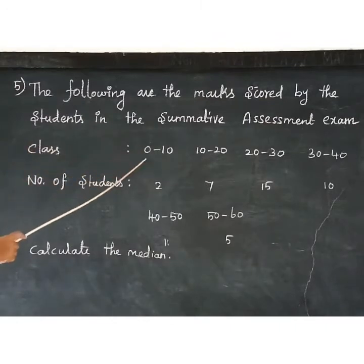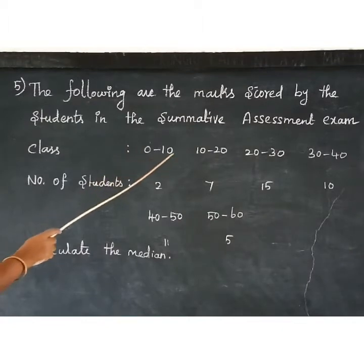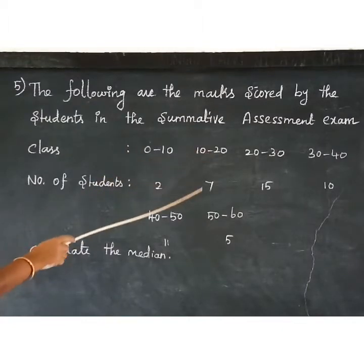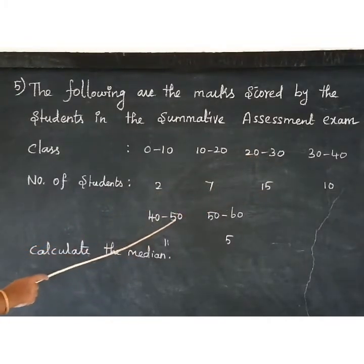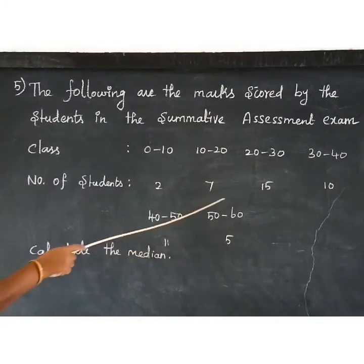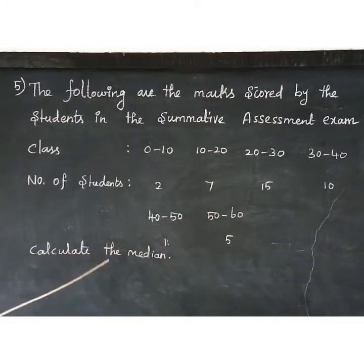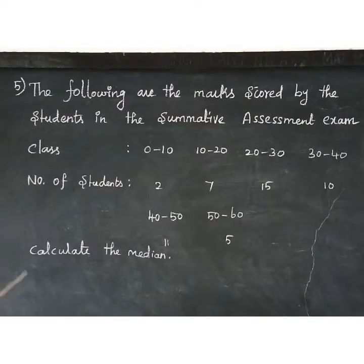The class interval and number of students are given. 0–10 is 2, 10–20 is 7, 20–30 is 15, 30–40 is 10, 40–50 is 11, 50–60 is 5. Calculate the median value. This is grouped frequency distribution. Median equals L plus (n/2 minus m) divided by f, into c.